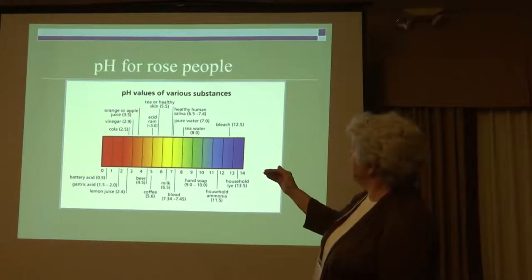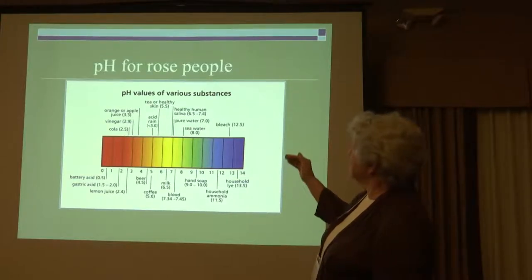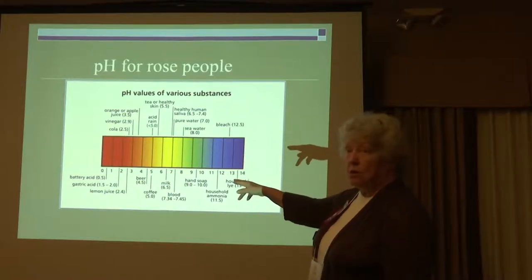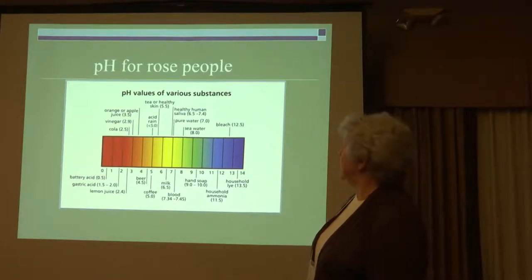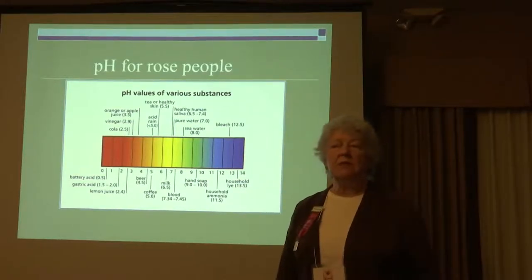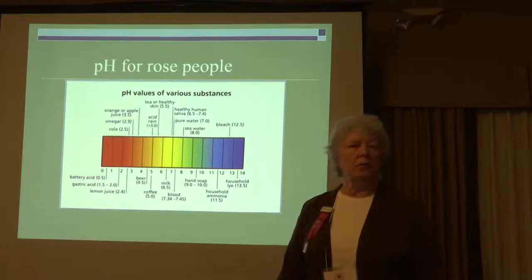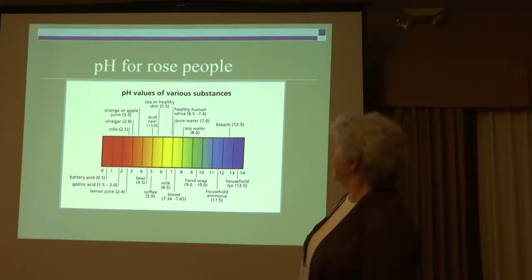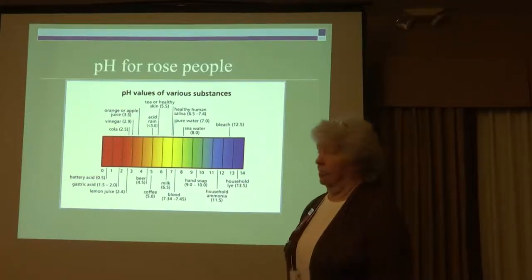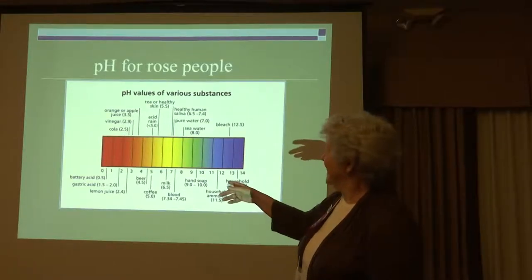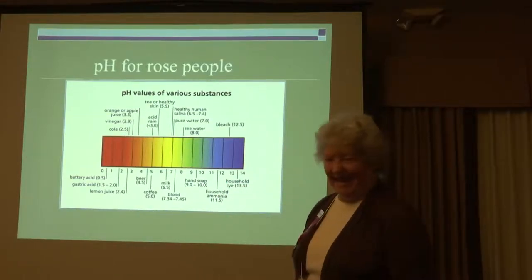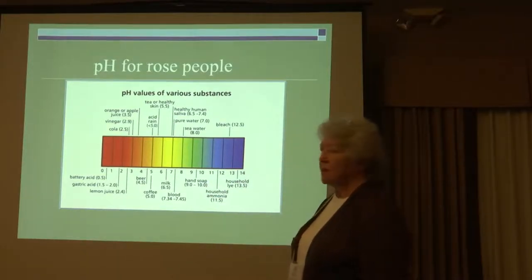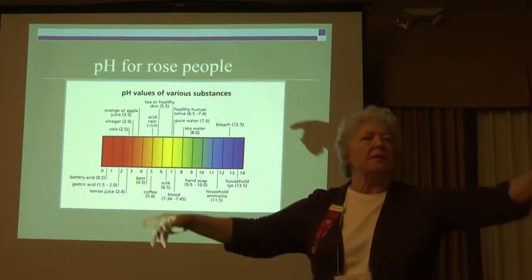Going in the other direction, you can go to tea, acid rain, coffee, beer — about 4.5. If you need to acidify your soil, you can pour used beer on it. Then lemon juice, battery acid, et cetera.